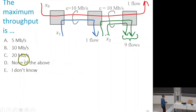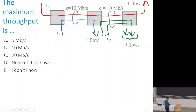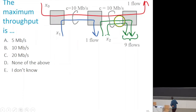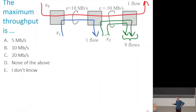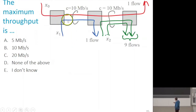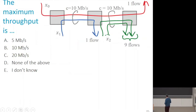The correct answer is 20 megabit per second. We have 10 megabit per second on the first link and 10 megabit per second on the second link. We cannot get more than 20 megabits per second in total, since that is the sum of all link rates. If we let the blue flow run at 10 megabit per second and each of the nine green flows run at 10 divided by 9, we reach that value. So 20 is an upper bound and it is reachable — it's the max.